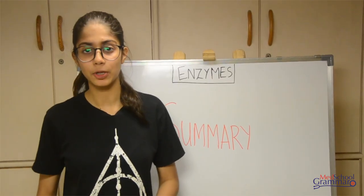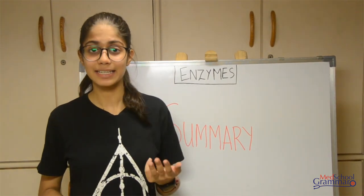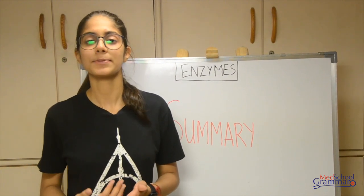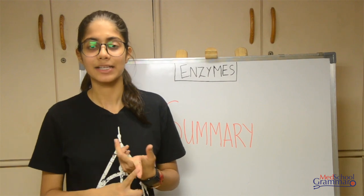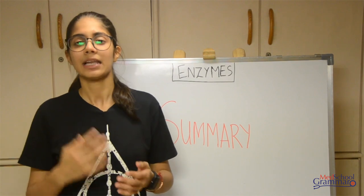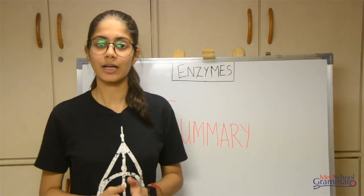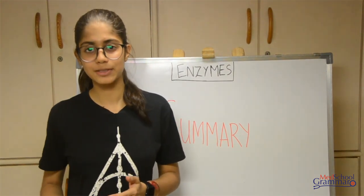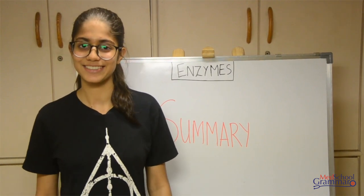Now that we've covered these topics, let me quickly summarize. We started with enzyme inhibition, where we had three types: reversible, irreversible, and allosteric. Then we spoke about enzyme specificity, which was also of three types: stereo specificity, reaction specificity, and substrate specificity. Lastly, we spoke about coenzymes. I hope you liked this video and understood the material. Go back to your books and read through this — I'm pretty sure it'll become much easier to grasp. I'll see you in the next one.